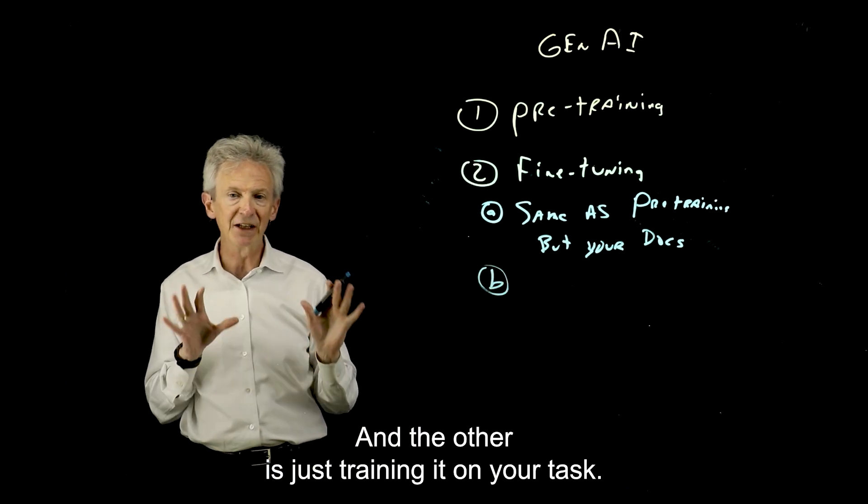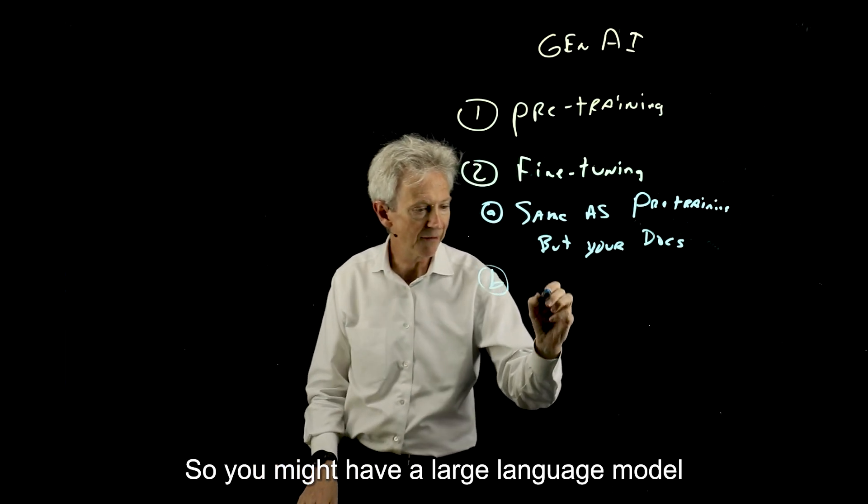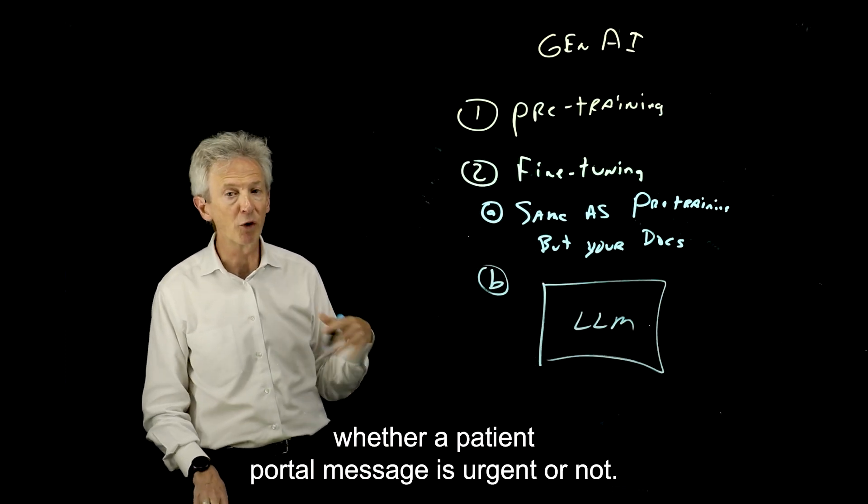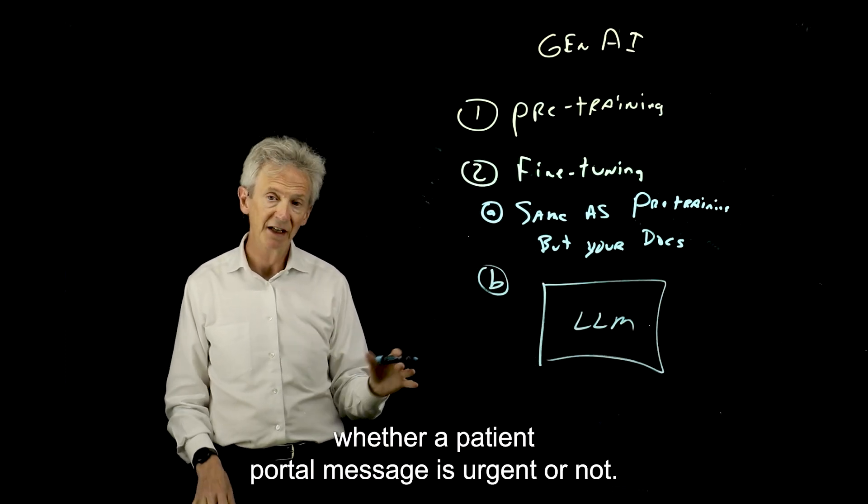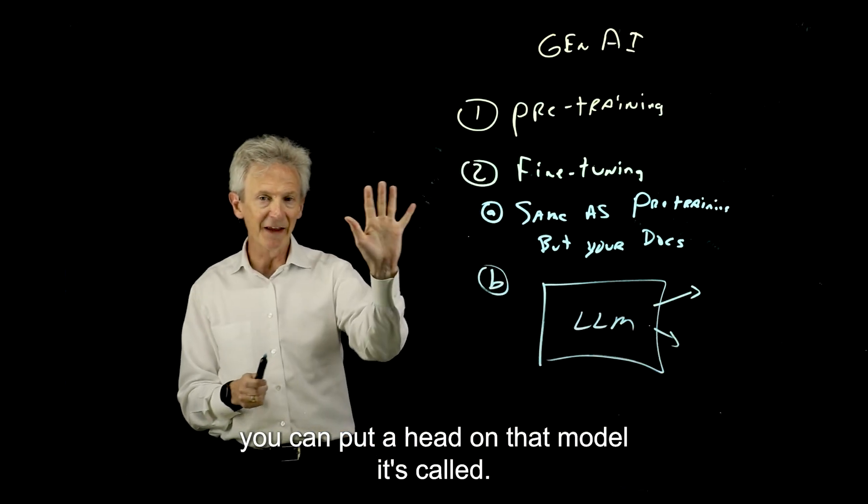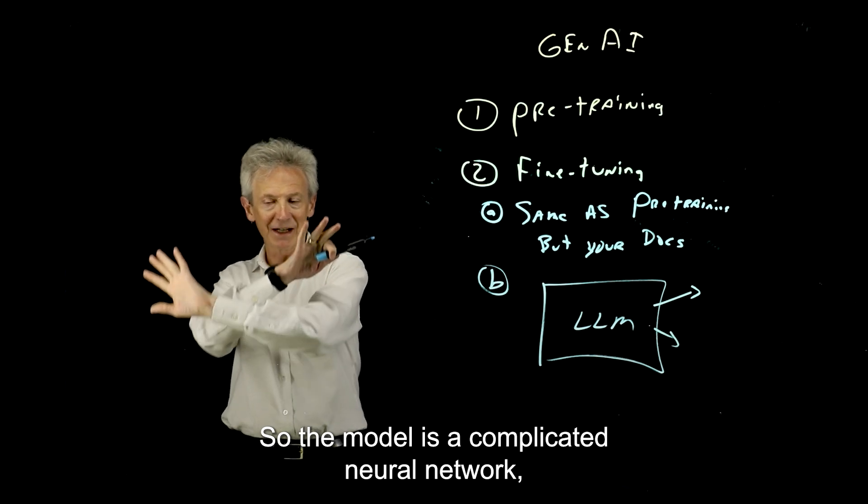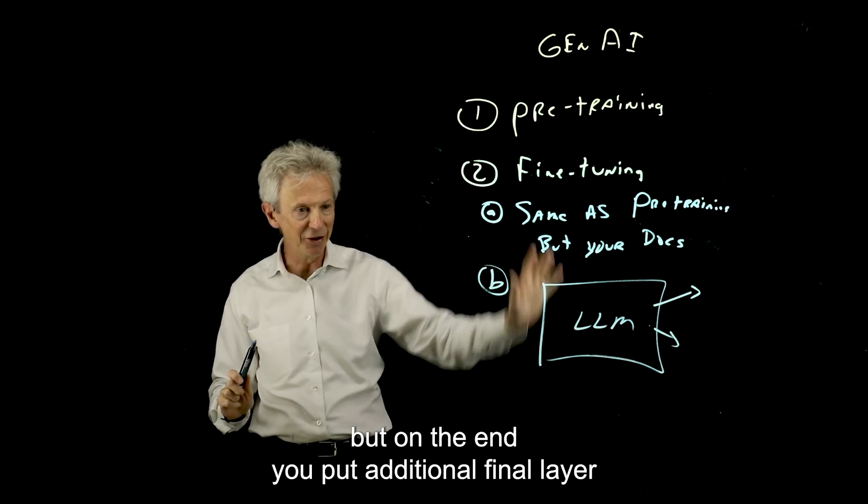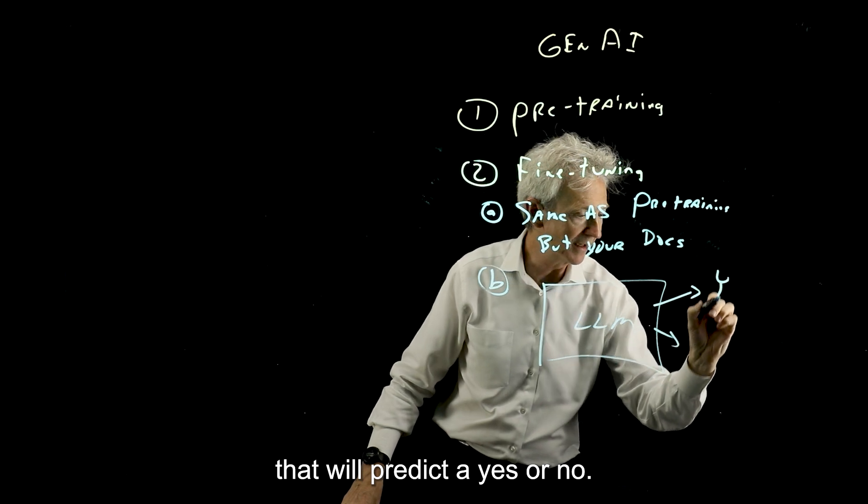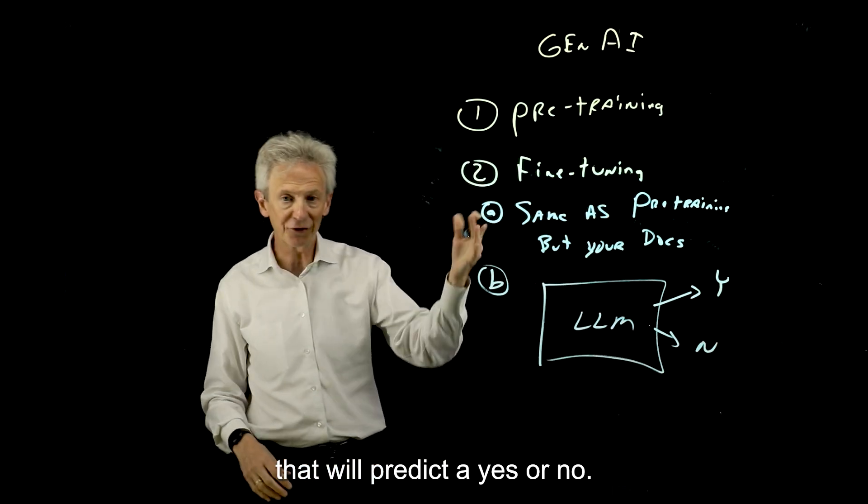And the other is just training it on your task. So you might have a large language model that predicts whether a patient portal message is urgent or not. So you can take that large language model, you can put a head on that model, it's called. So the model is a complicated neural network, but on the end, you put an additional final layer that will predict a yes or no.